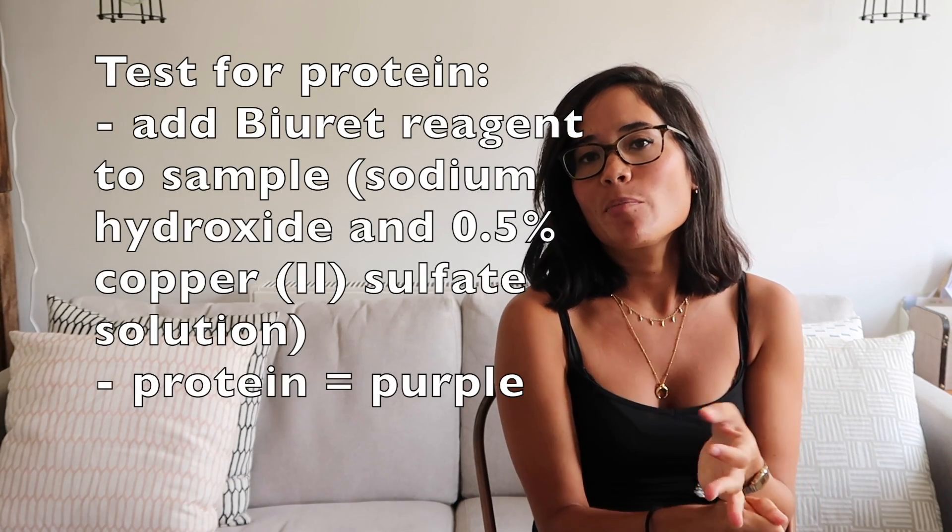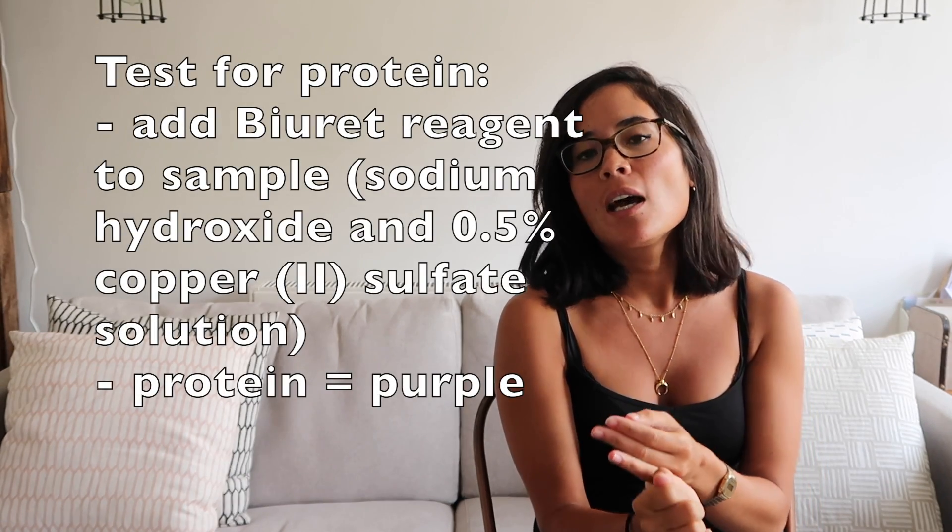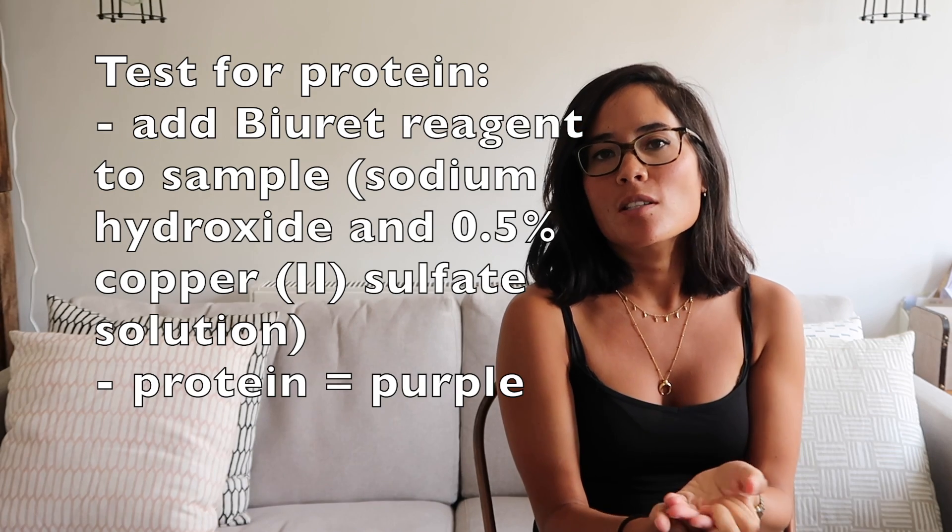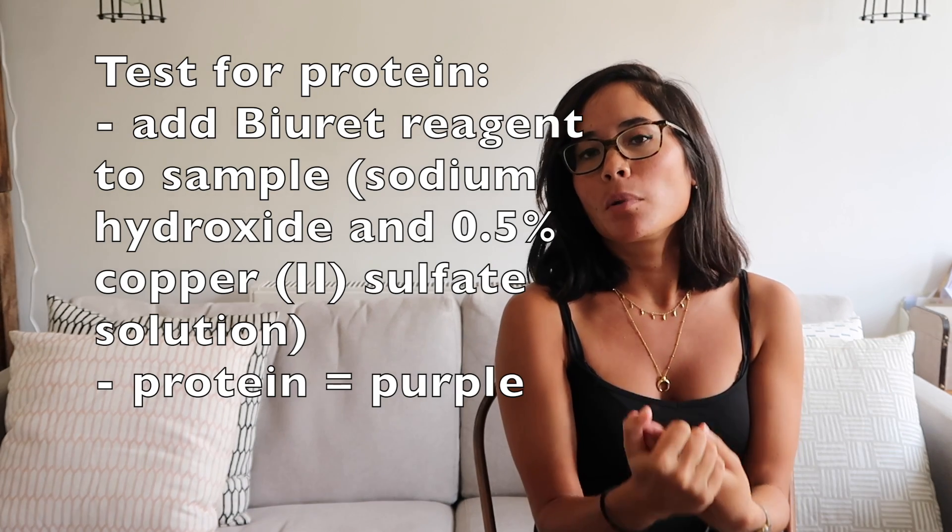Some of you may have needed to know the test for protein — we call it the Biuret reagent. It's made of a mixture of sodium hydroxide with a few drops of 0.5% copper sulfate solution, and in the presence of protein it will turn a lovely purple-mauve colour. I hope you found this video helpful — as always leave any comments below, I'll read them, and I'll be back soon with another video. Bye guys!